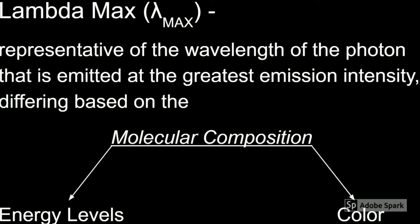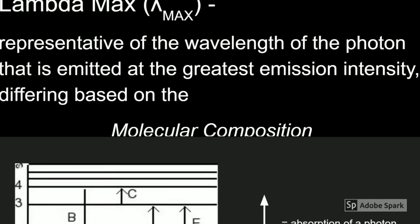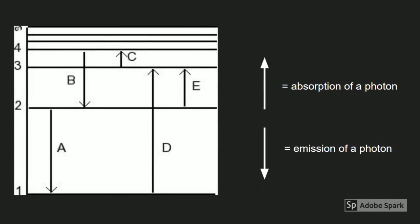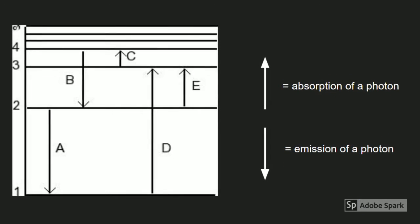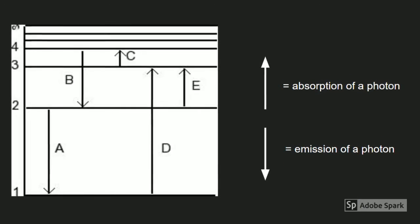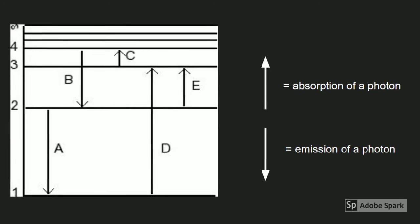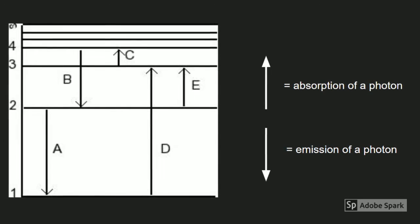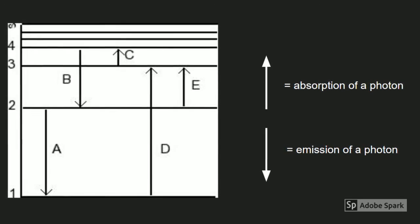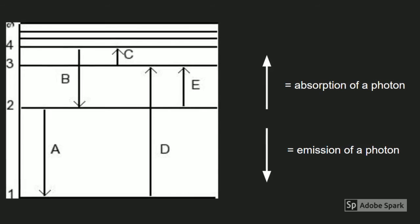Molecular composition determines the amount of energy levels available and what colors are emitted. An upward arrow on an energy level diagram represents a photon being absorbed, which requires an input of energy because the electron is moving to a higher energy state. A downward arrow represents a photon being emitted because the electron is moving back down, or relaxing, to the lower energy level.